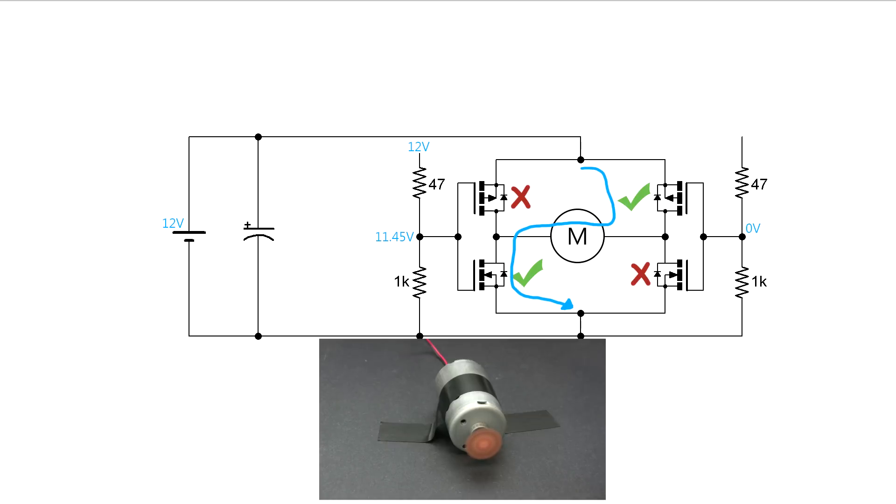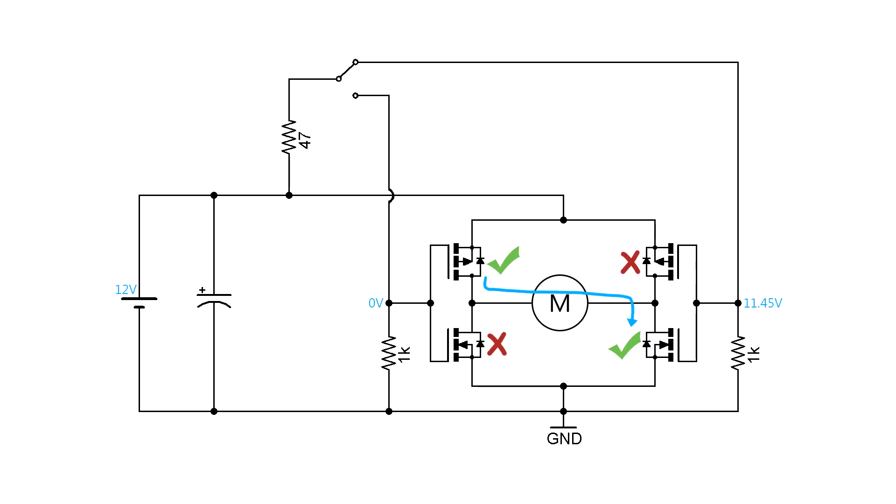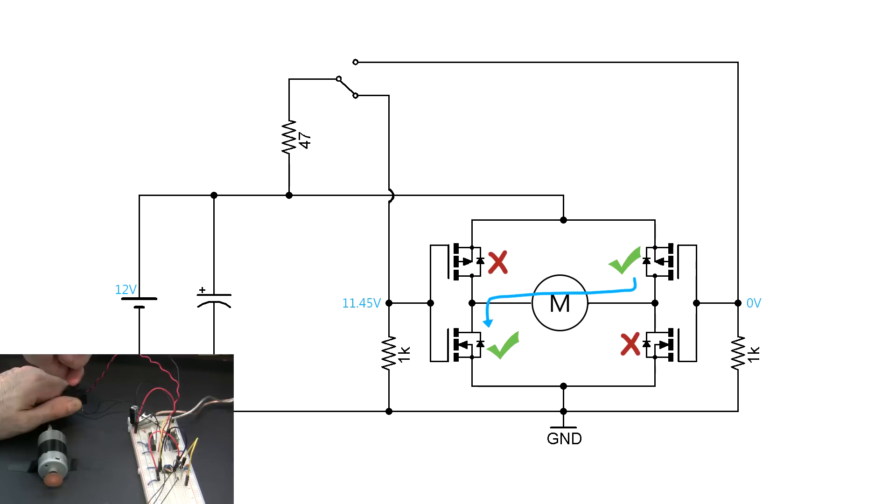In the real world, how can we easily switch from side to side? Well, if we add a single pole double throw switch to the circuit, now only half the bridge can be active at any given time. I'm using a big switch for demonstration purposes here, but you don't have to. Any switch that can handle 100mA will be fine.